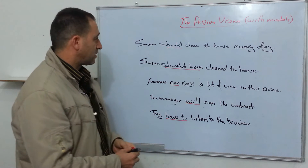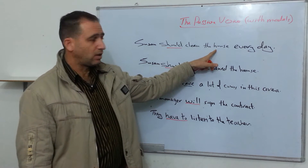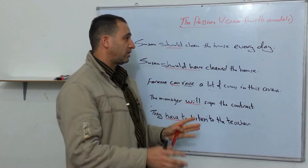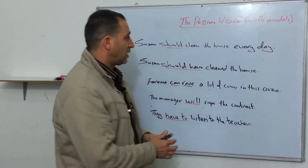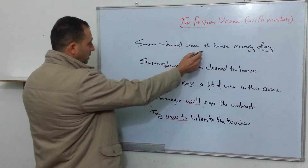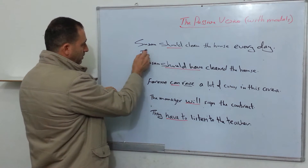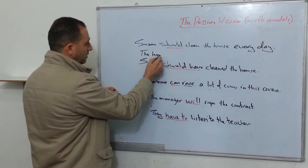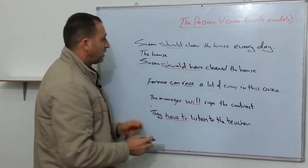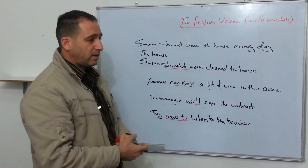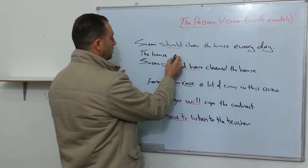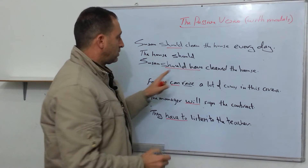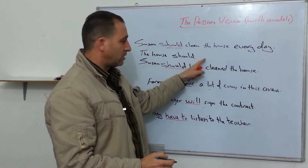In the passive voice, I focus on the object — I make it very special by starting with it. So in the passive voice, I start with the object: the house. Then I add the helping verb again: should. After the helping verb, I'm going to have 'clean' — the main verb.